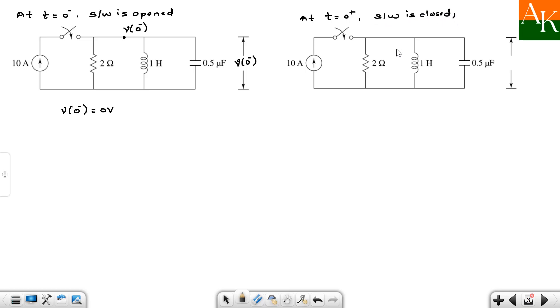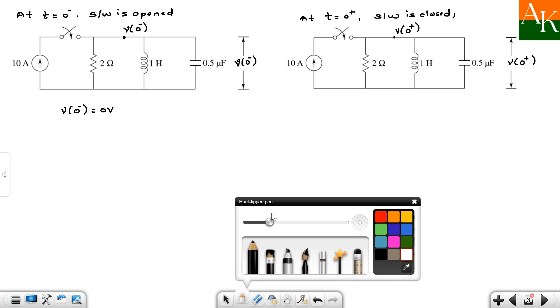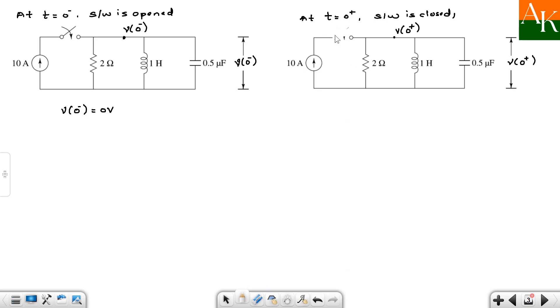At t equals 0 plus, what will happen? The switch is closed. For a sudden change capacitor acts as a short circuit. Before that I will show the voltage over here. This is V 0 plus. Even this voltage you have to write down as V 0 plus and we have to do some modification in the circuit. First modification is related to the switch position. Now the switch is closed. So it will act as a short circuit and suddenly this current gets applied to these elements. Sudden change capacitor acts as a short circuit and inductor acts as open circuit.